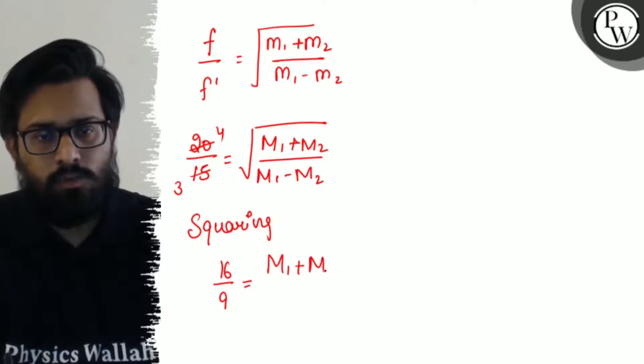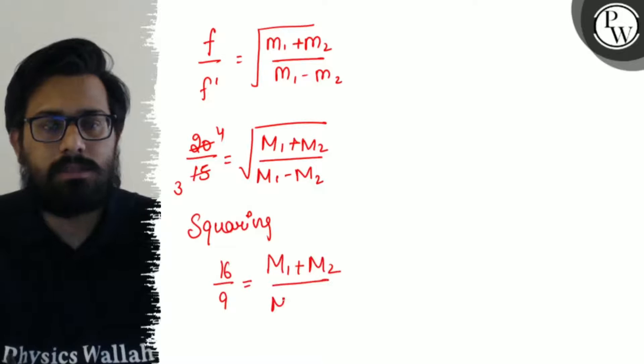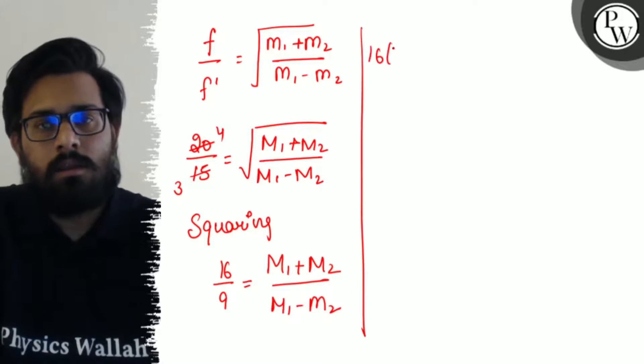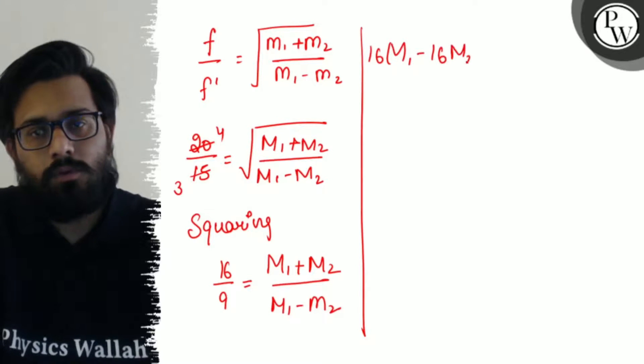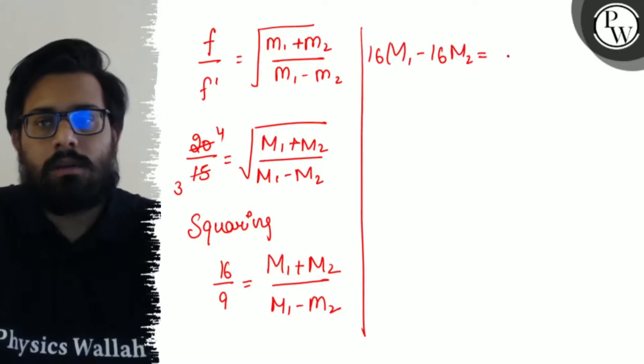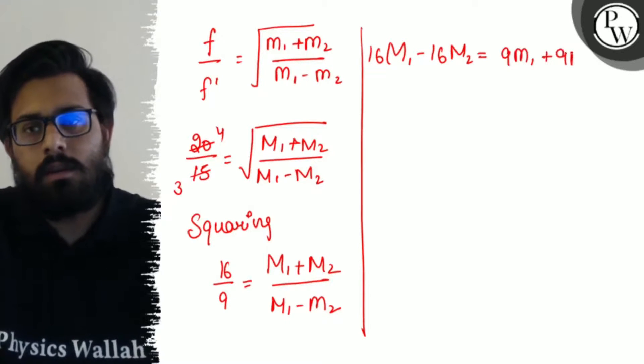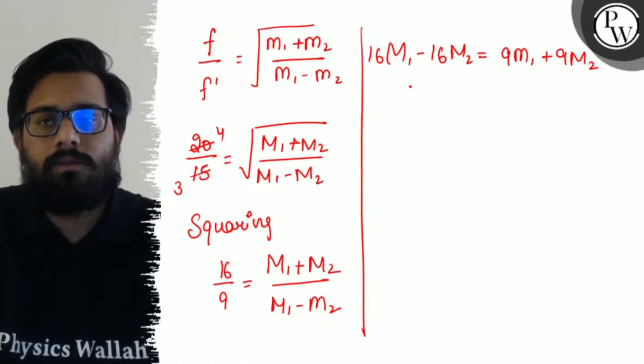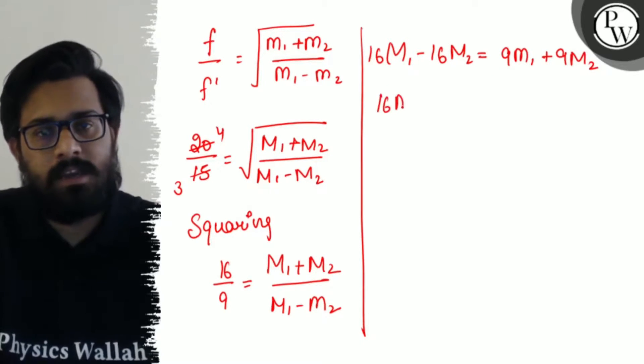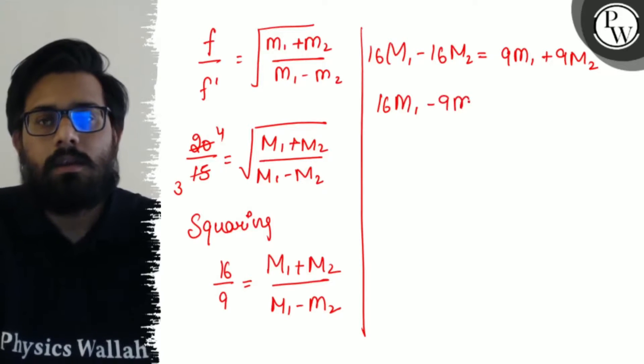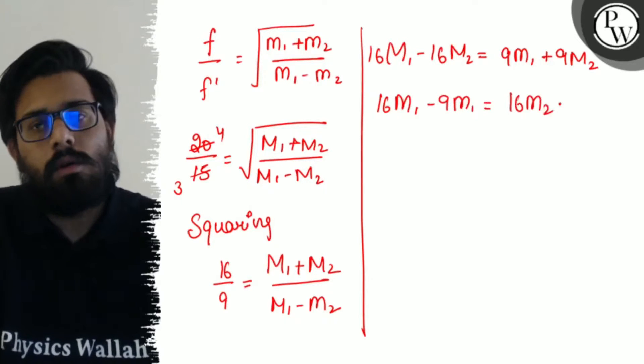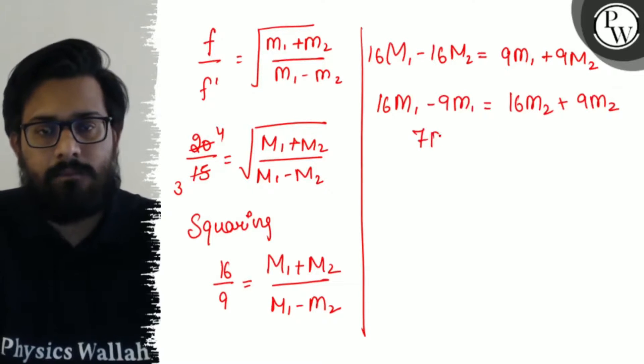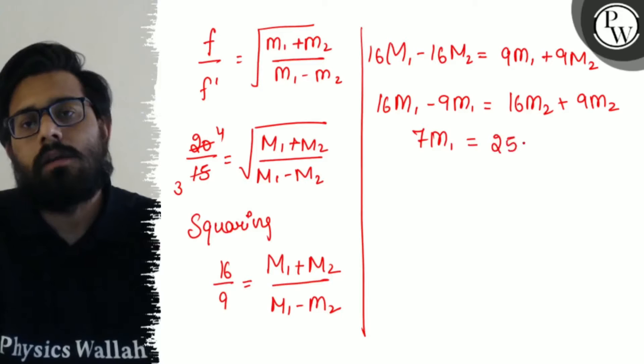For solving it further, 16 times M1 minus M2 equals 9 times M1 plus M2. Cross multiply - 16M1 minus 16M2 equals 9M1 plus 9M2. So 16M1 minus 9M1 is equal to 16M2 plus 9M2. That gives us 7M1 equals 25M2.